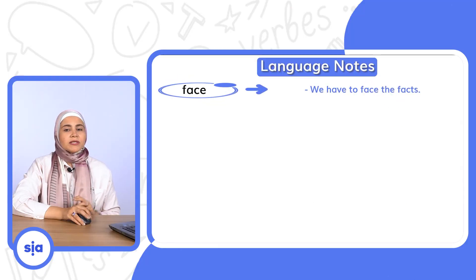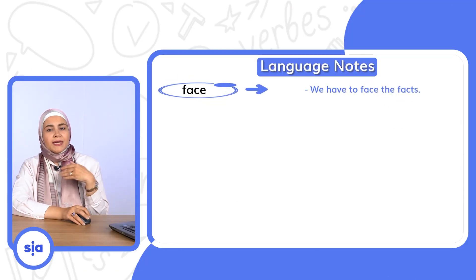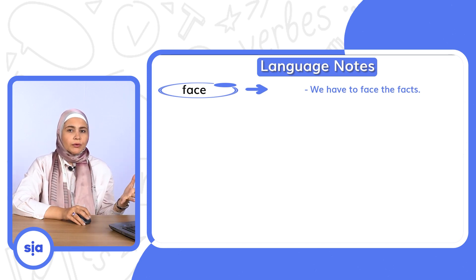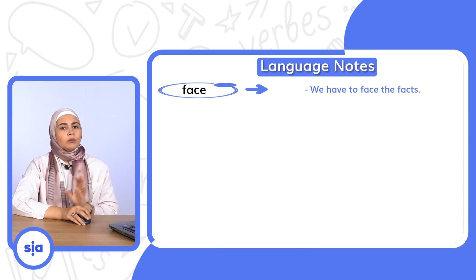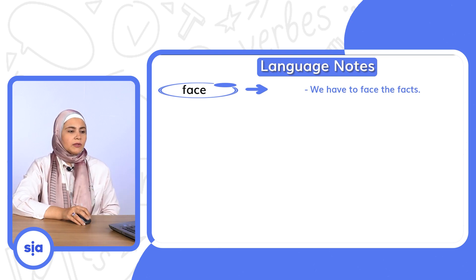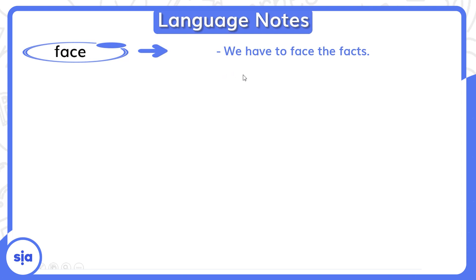Next we need to talk about some words that confuse us. في كلمات بنتلغبط بيها — نفس الكلمة ممكن تيجي كفعل وممكن تيجي كاسم. The first word is face. Example: We have to face the facts — لازم نواجه الحقائق. فـ face هنا معناها نواجه — يبقى فعل، verb.